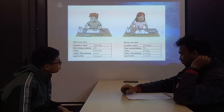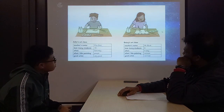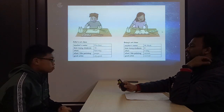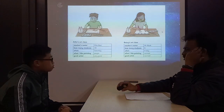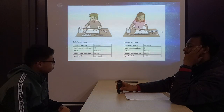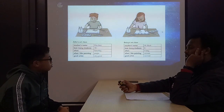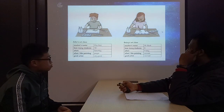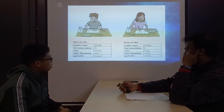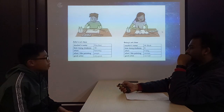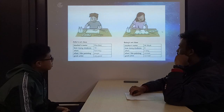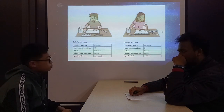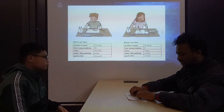What is the name of Daisy's teacher? His name is Mr. Black. How many students are in the class? There are about 8 students in class. Daisy likes to paint animals. Daisy is not a bad artist.